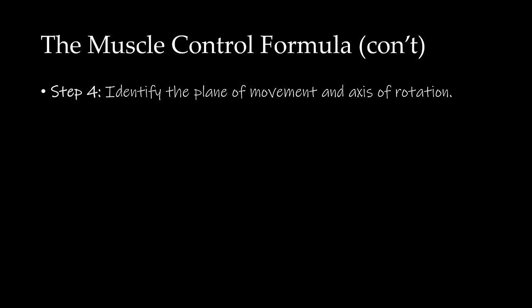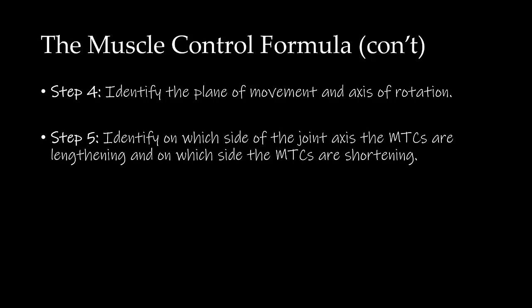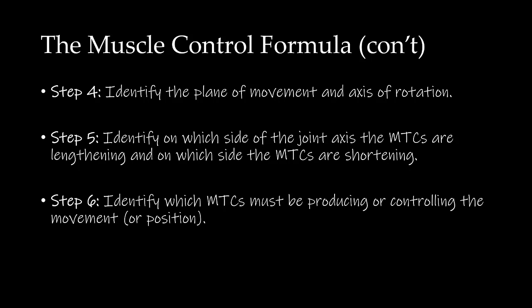In Step 4, you identify the plane of movement and the axis of rotation. Step 5, identify on which side of the joint axis the MTCs are lengthening and on which side the MTCs are shortening. And in Step 6, we identify which MTCs must be producing or controlling the movement or position.